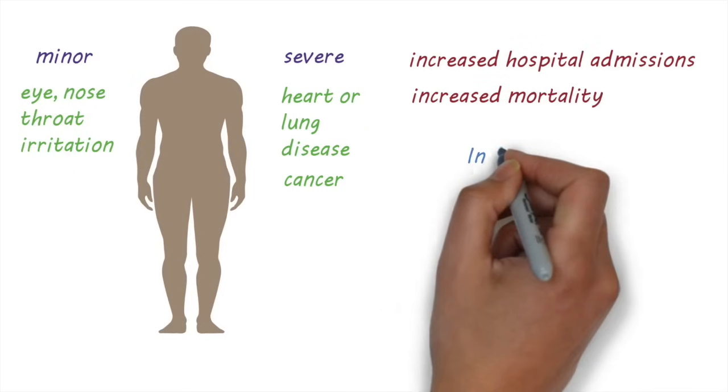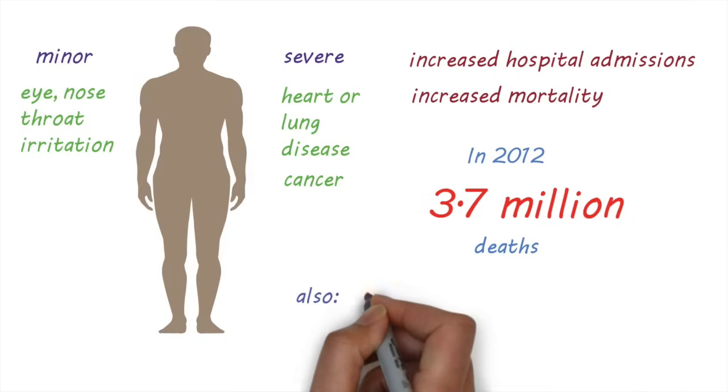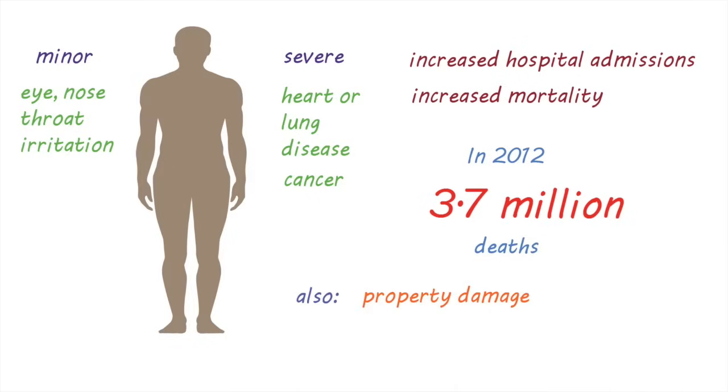In 2012, outdoor air pollution was estimated to have caused 3.7 million deaths around the world. In addition to causing health effects, air pollution can also lead to damage to property, reduced visibility, and have other effects on the environment, like acid rain.